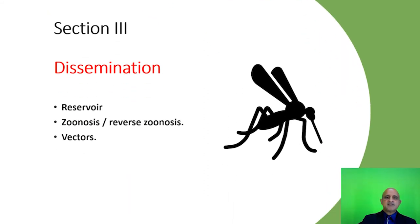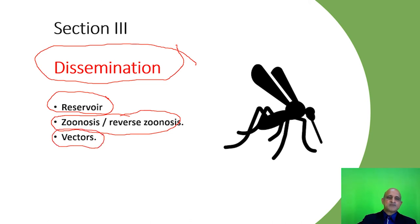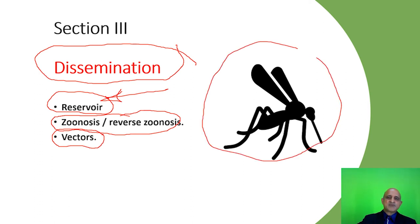Section 3 focuses on dissemination. It indicates if a reservoir exists, whether zoonosis is present, and whether the biological agent is transmitted via animals and specific vectors. The reservoir for the biological agent may be a human host, an animal host, or an insect.